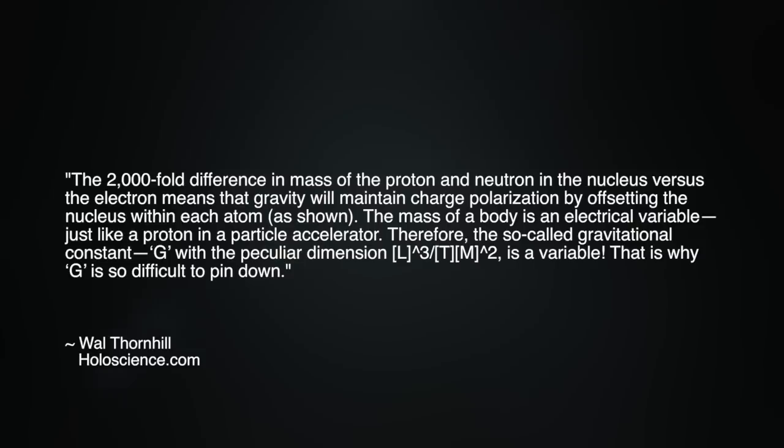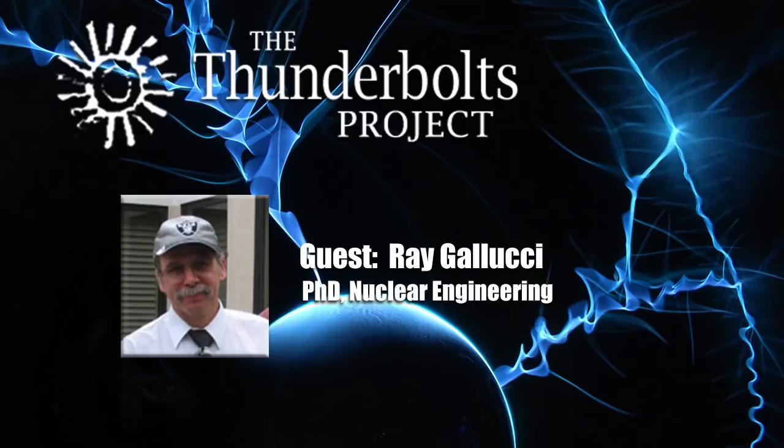The 2,000-fold difference in mass of the proton and neutron in the nucleus versus that of the electron means that gravity will maintain charge polarization by offsetting the nucleus within each atom. The mass of a body is an electrical variable. Therefore, the so-called gravitational constant g, with the peculiar dimensions of length cubed over mass times time squared, is the variable. That's why g is so difficult to pin down.